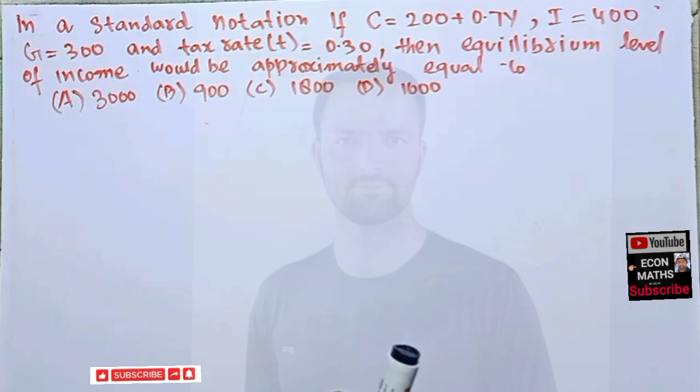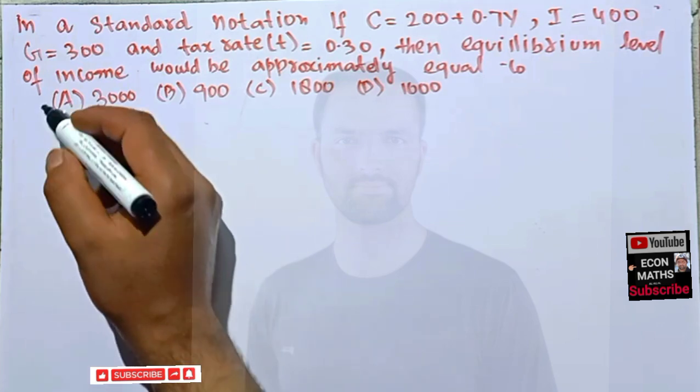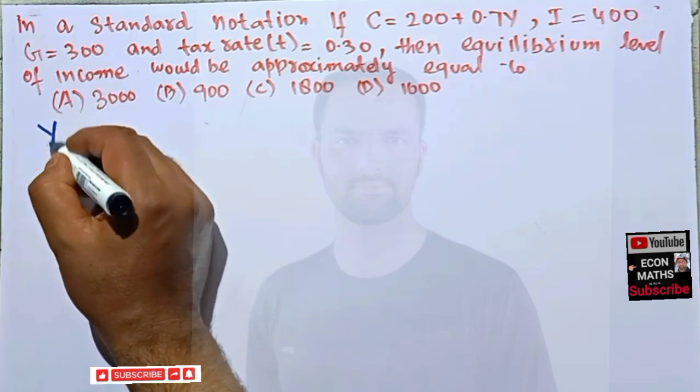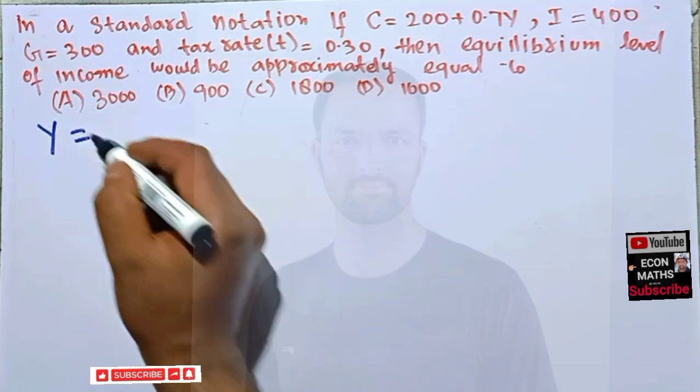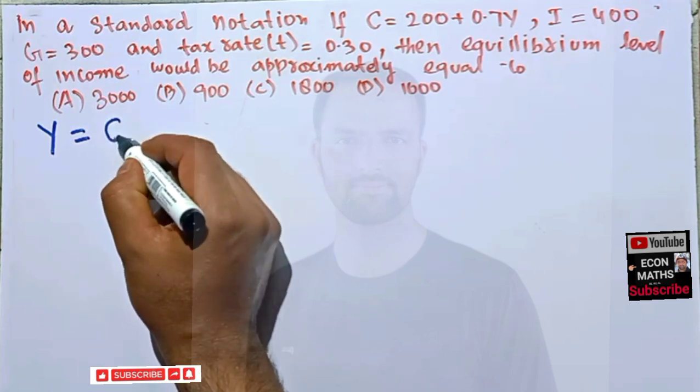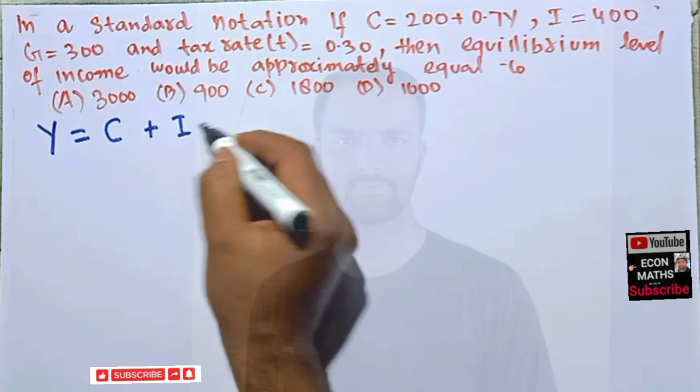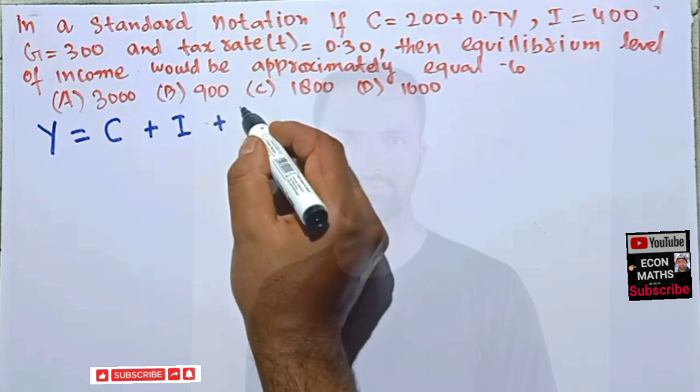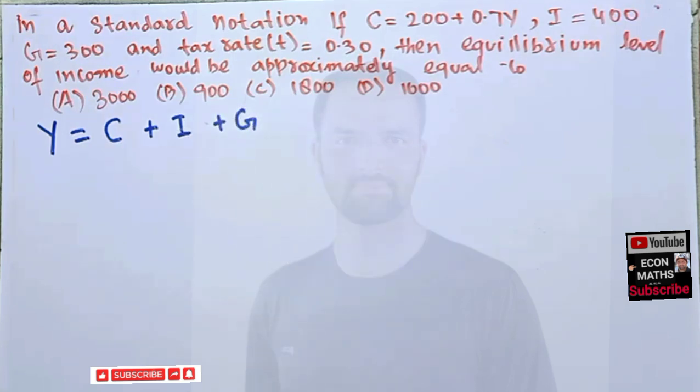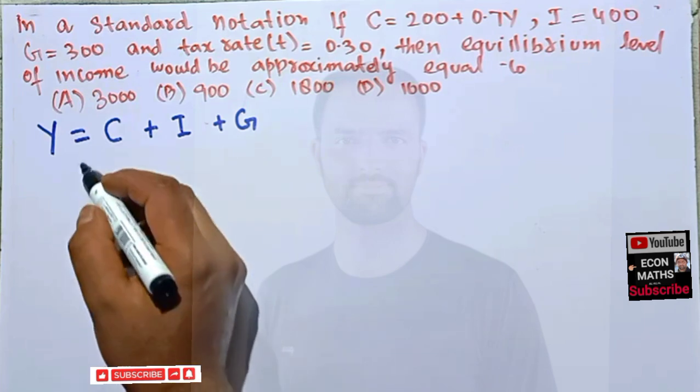So we'll see what is the correct answer here. What is our national income identity? That is Y equals consumption expenditure plus investment expenditure plus government expenditure.